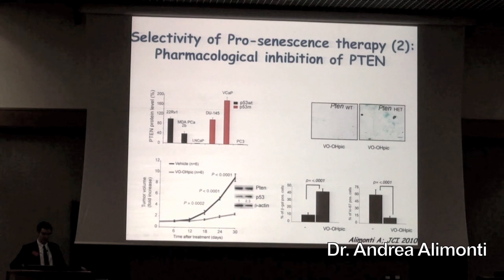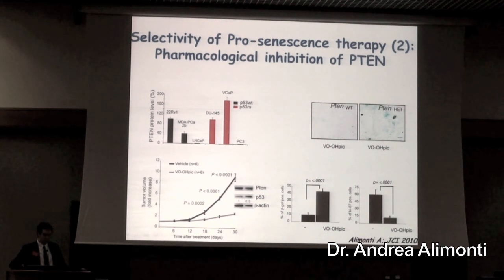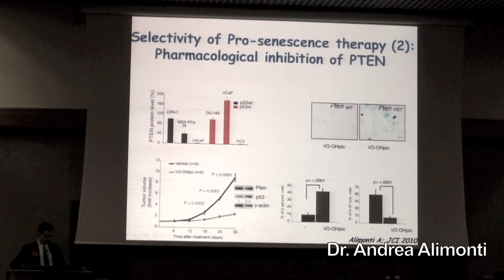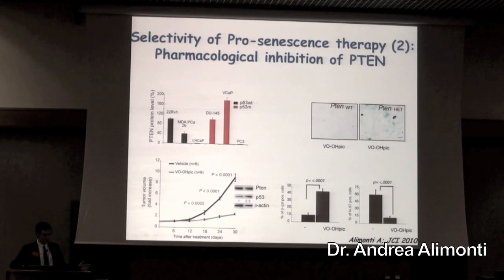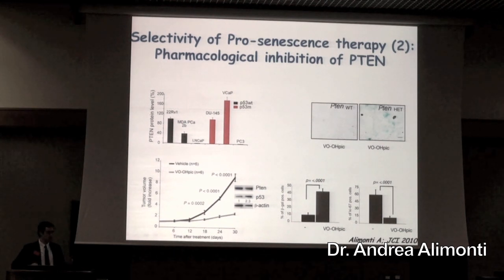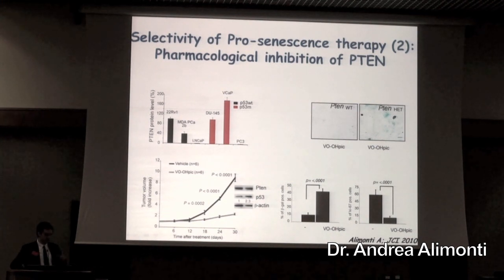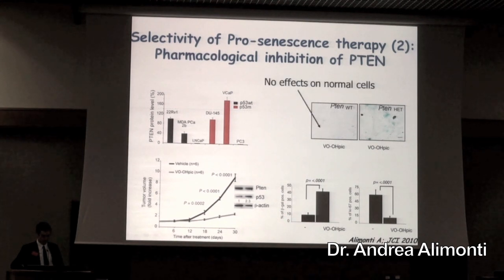We characterized different cell lines on the basis of PTEN and P53 status, and we did xenograft mouse models. What we observed is that this inhibitor was effective in treating cells which have a very low level of PTEN and are wild type for P53. So knowing the genome, you can really go with the specific inhibitor to drive senescence and blocking, and this looked like it works also in preclinical mouse models.